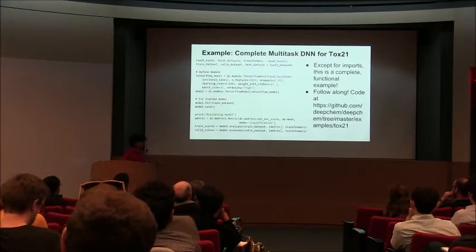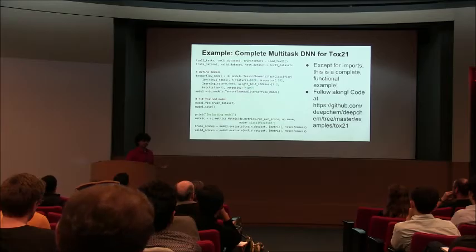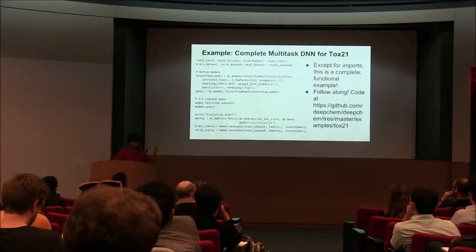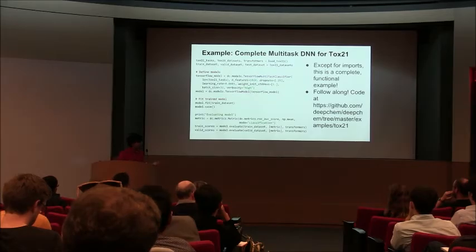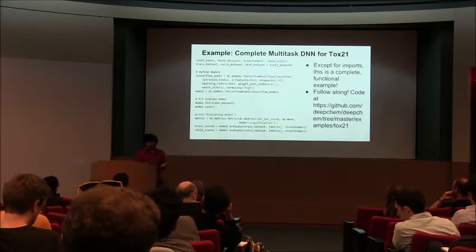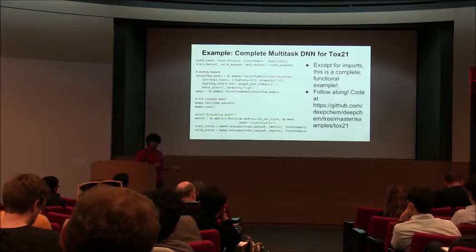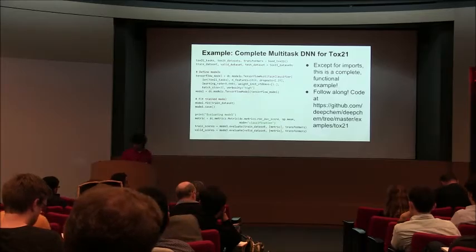One caveat: you do need a GPU. In the new deep learning world, without a GPU nothing can happen. But it's about $1,500, so fairly affordable. With a modern GPU for a couple thousand dollars and 40 lines of Python, you can duplicate the research we did at Google with what I think was something like 50 million CPU hours. This was really the goal of DeepChem — making it easy to duplicate the work we'd done at Google and extend it to other folks in the community.